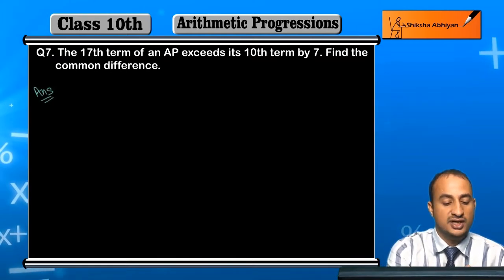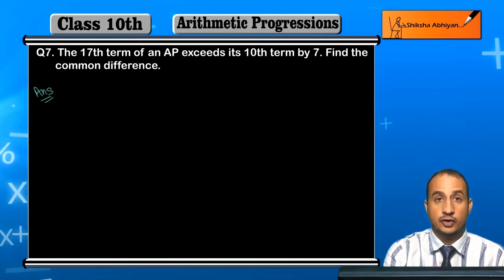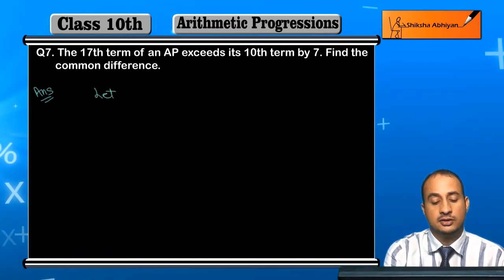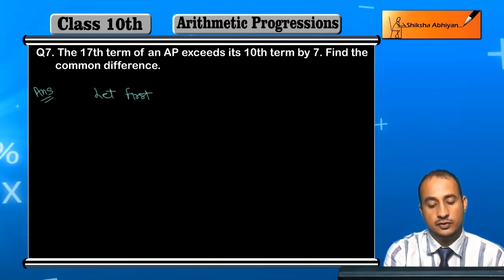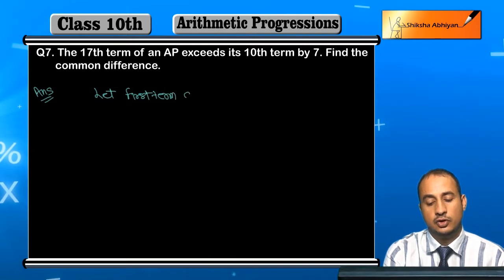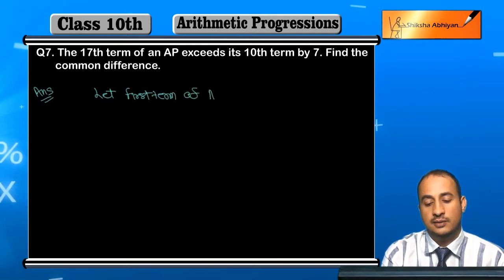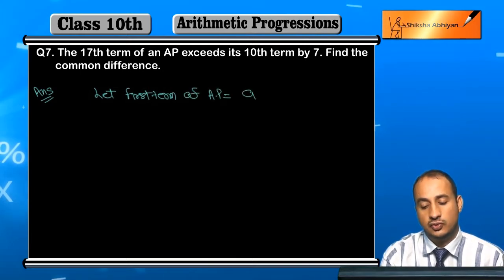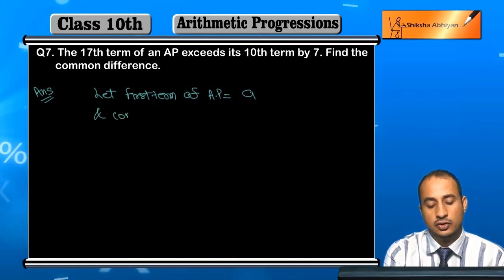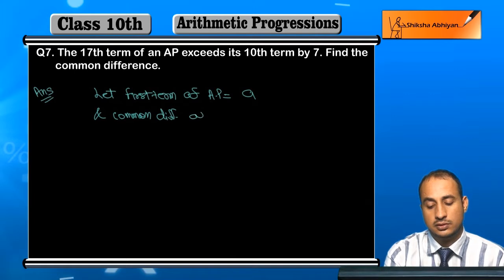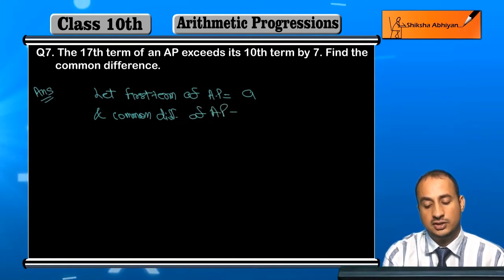First of all, if you don't know the common difference or the first term, let first term of AP be equal to A and common difference of AP be equal to D.